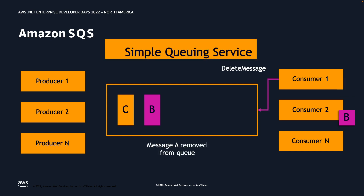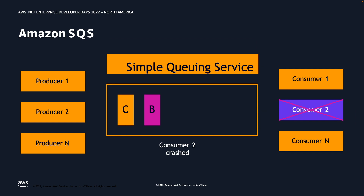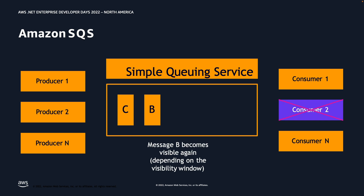If consumer one successfully processes message A, it invokes the delete message API and message A is removed from the queue. If consumer two crashes, message B will become visible again after the visibility window elapses — something we'll look at in detail during the demo. The key point is that messages will not be lost until the consumer issues a delete message call.